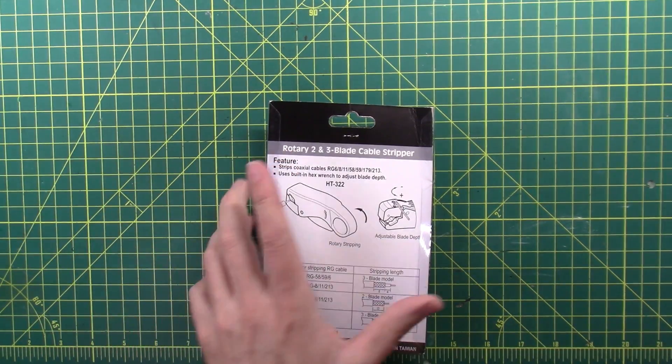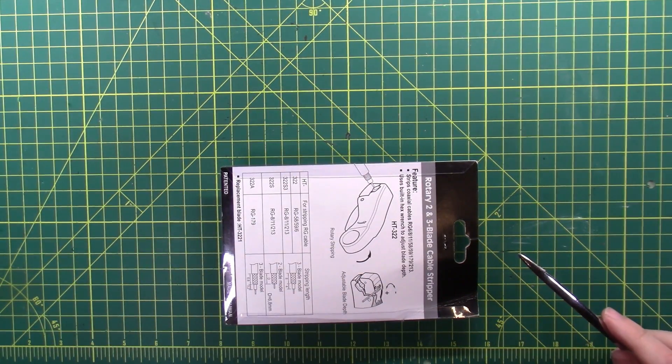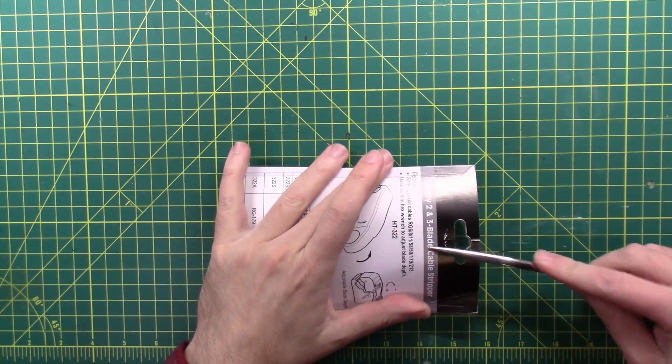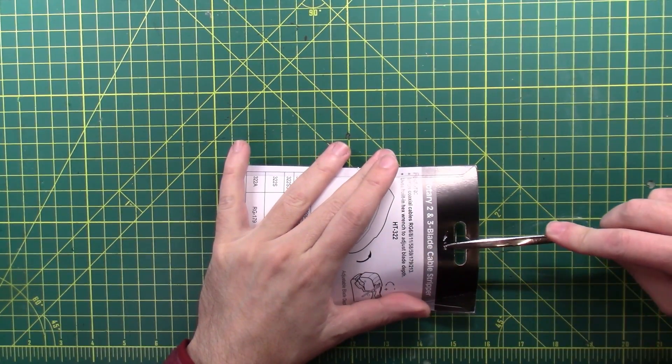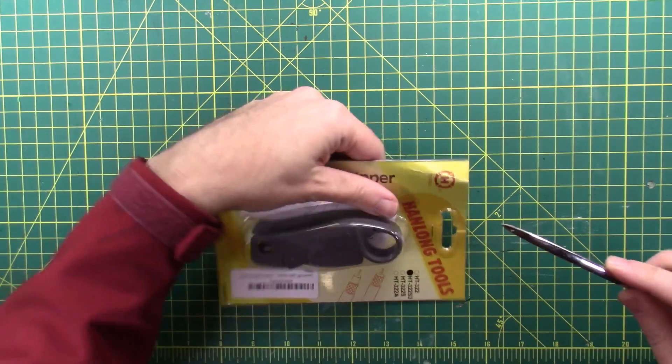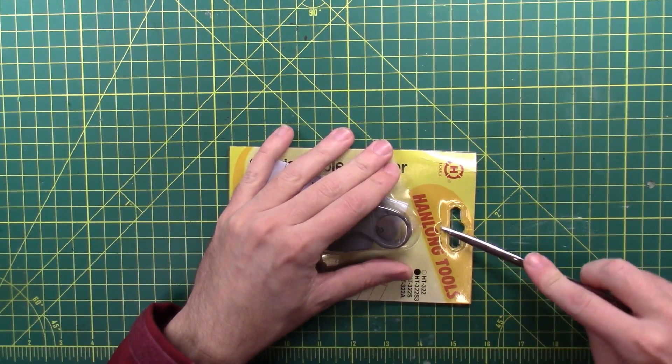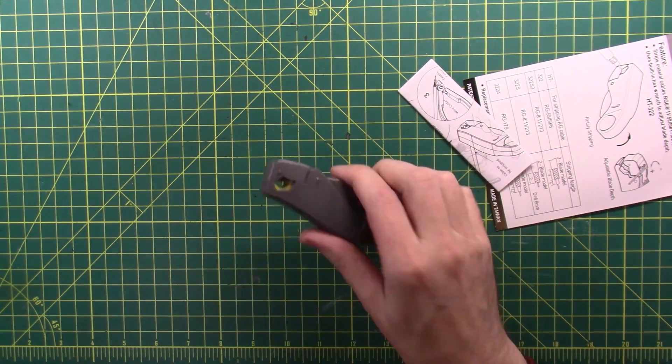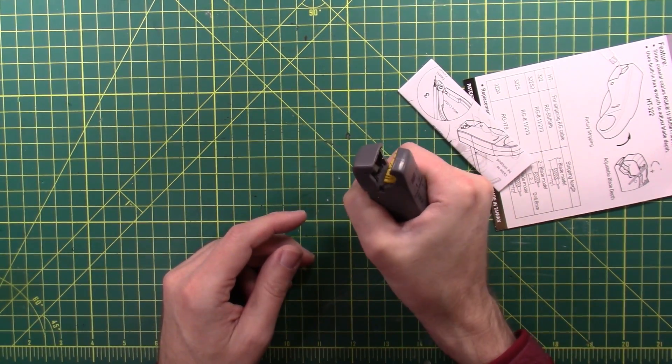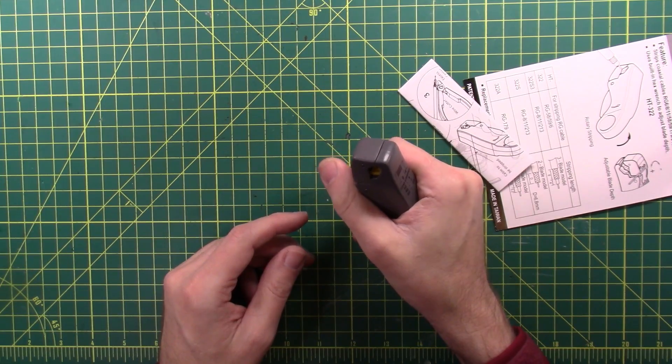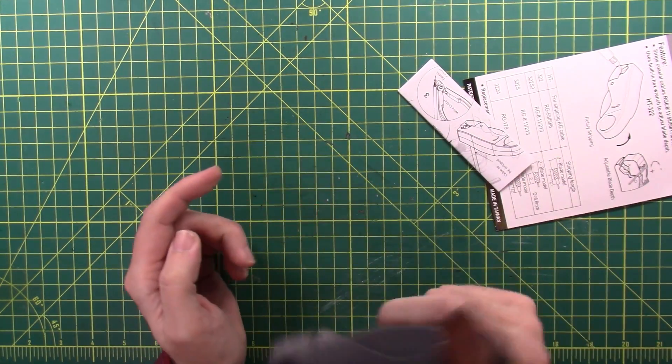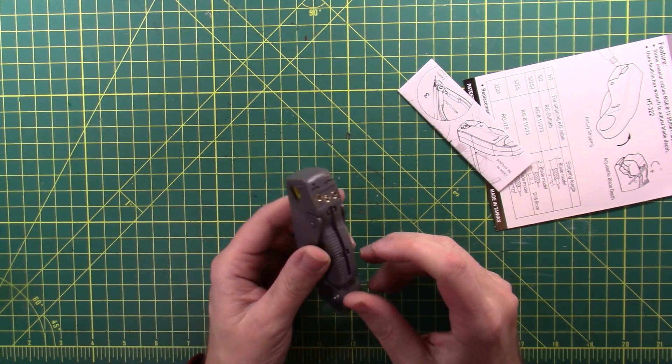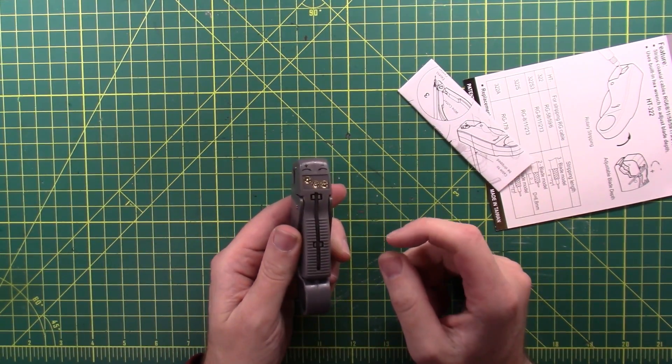This tool was $12 on Amazon. There is a link in the description below. And I am taking it out of the package for the first time, as you can see. So you get to ham along with me while I figure out how this thing, if this thing works. The goal of this one here is you can squeeze it to open it. There should be two blades in there, which there are. Clamp it down on your cable, spin it around your finger. Well, spin it around the cable with your finger.